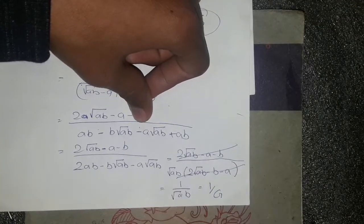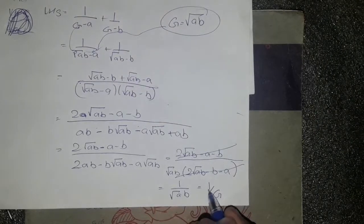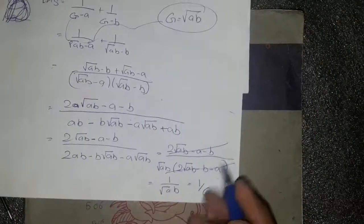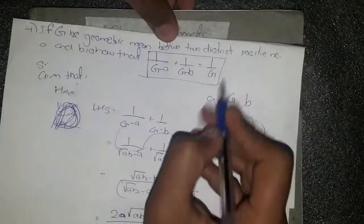So here we can see that root AB equals to G, so here the condition is proved. Thanks for watching.